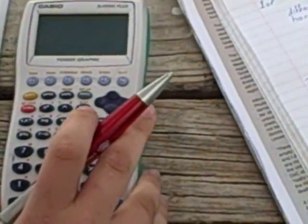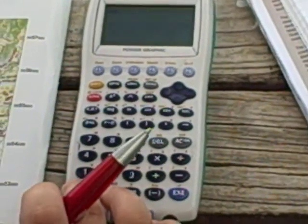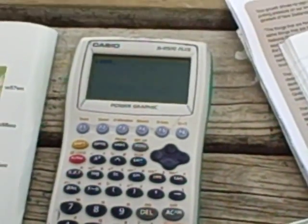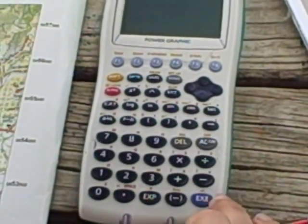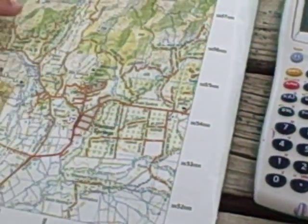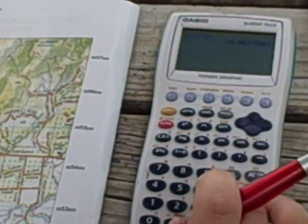So to transfer it to scale, we do 1000, which is metres of the scale, divided by 29. And then we times it by our length, which was 44.